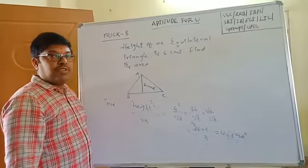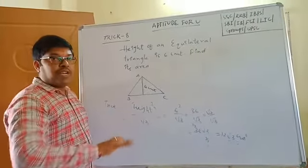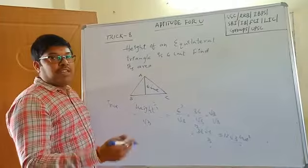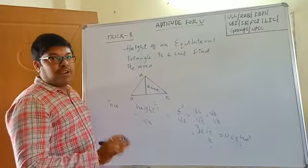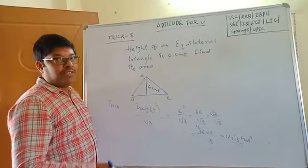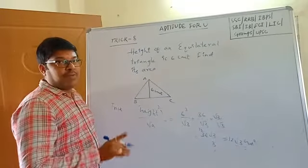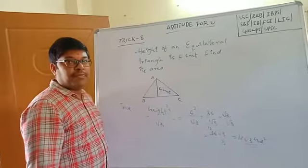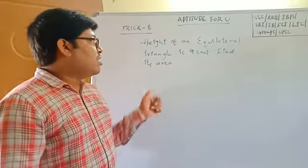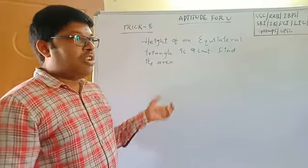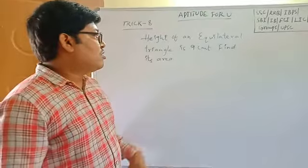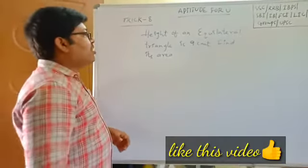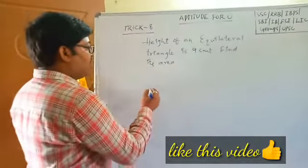So it is easy to do this using the short trick. This is the formula. The second question: the height of an equilateral triangle is 9 cm. Find its area.